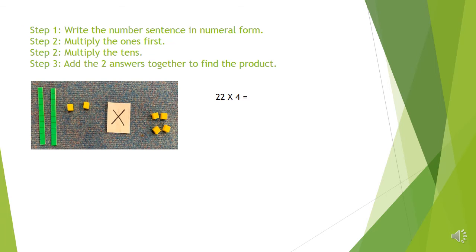So remember the first step is to write the sentence in numeral form. I've done that already here, but let's go through it together. We've got one, two tens. So 10, 20, 21, 22, 22.